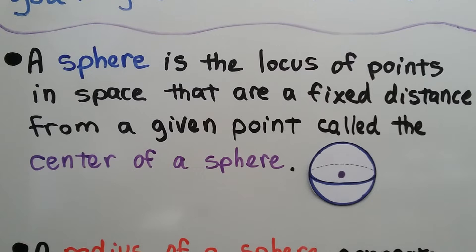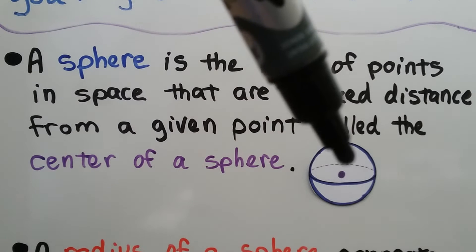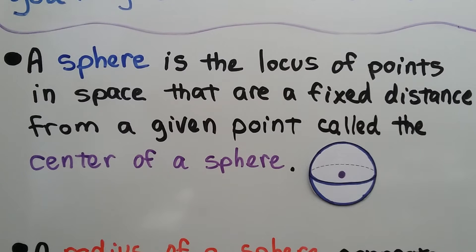A sphere is the locus of points in space that are a fixed distance from a given point called the center of a sphere. So right here, we have the center of the sphere, that purple dot.